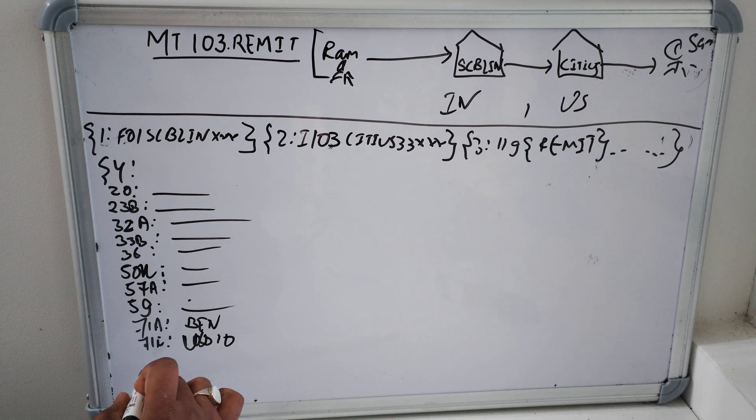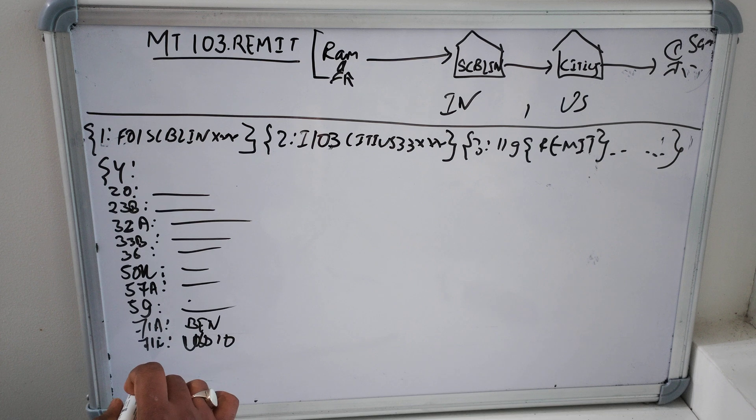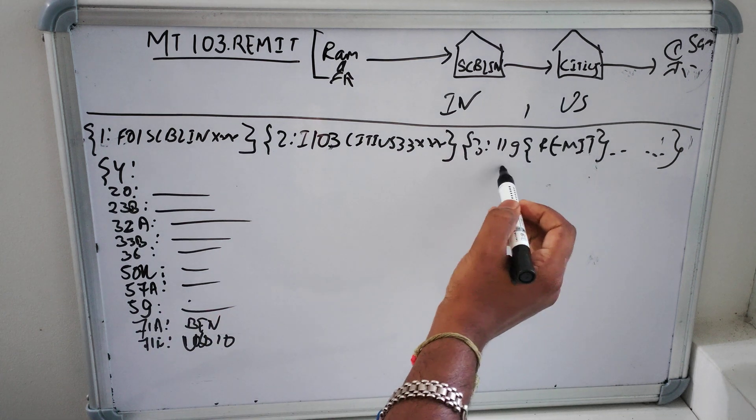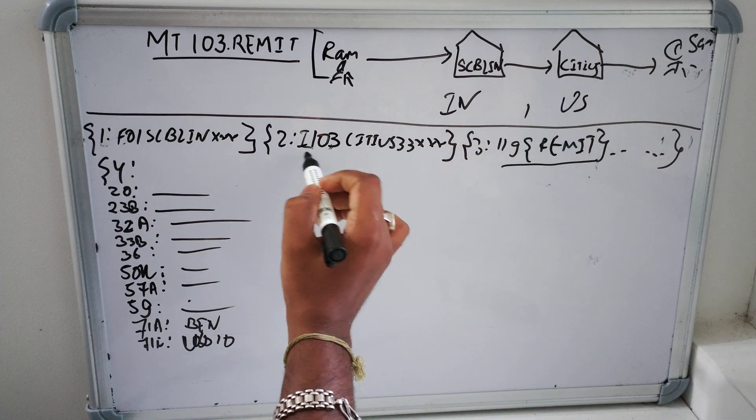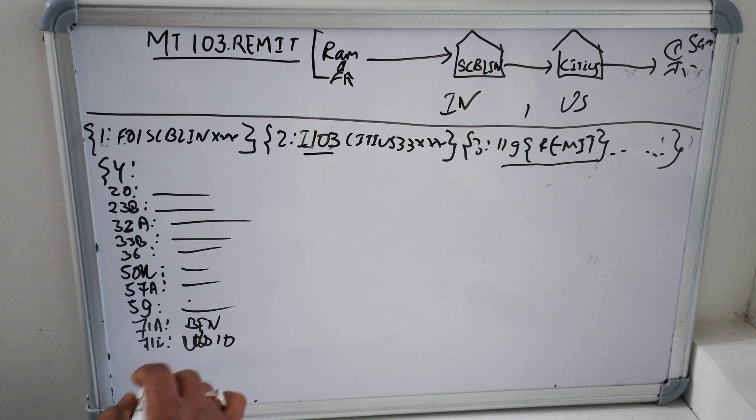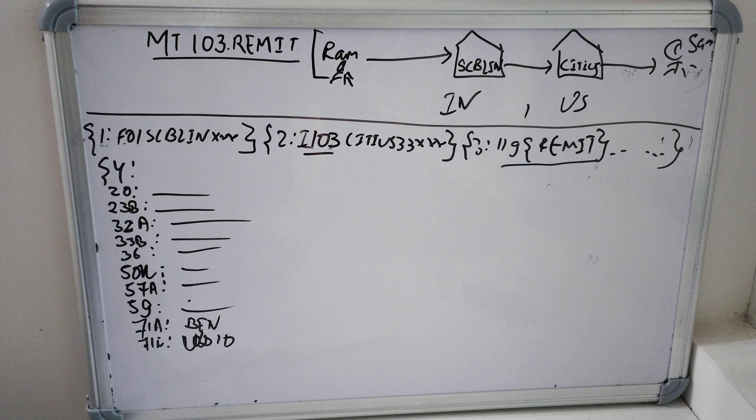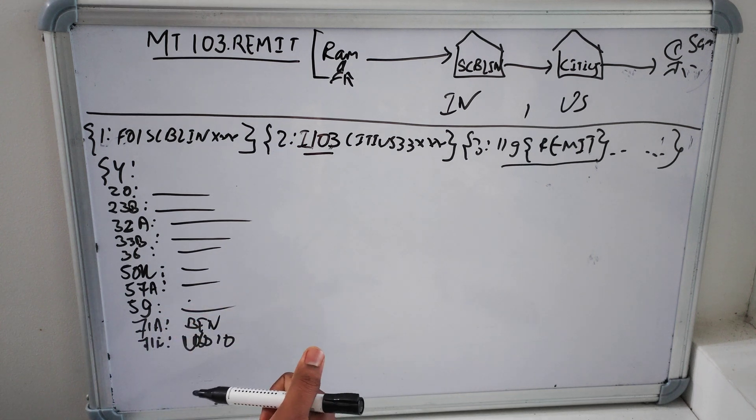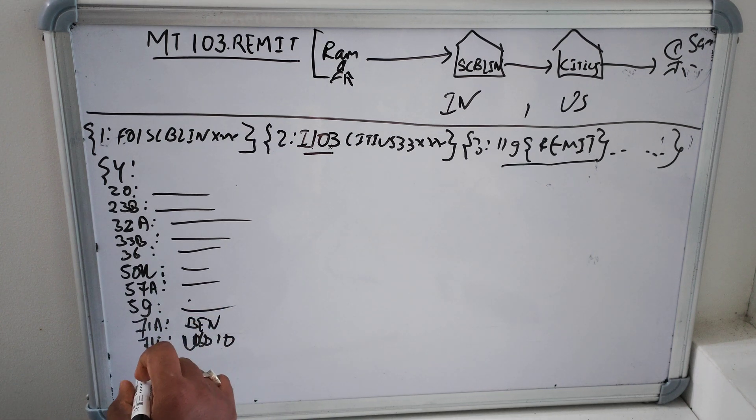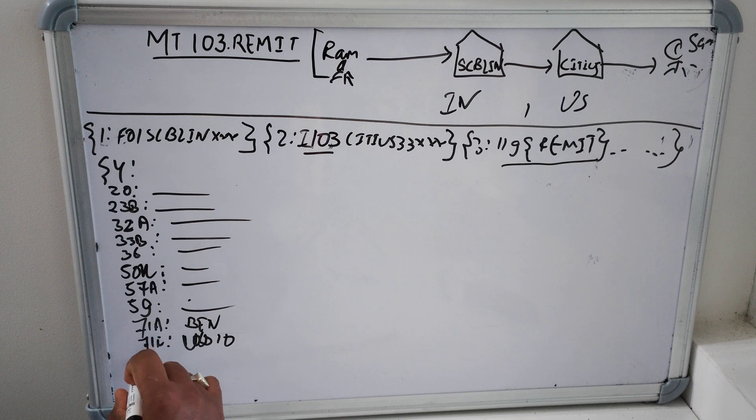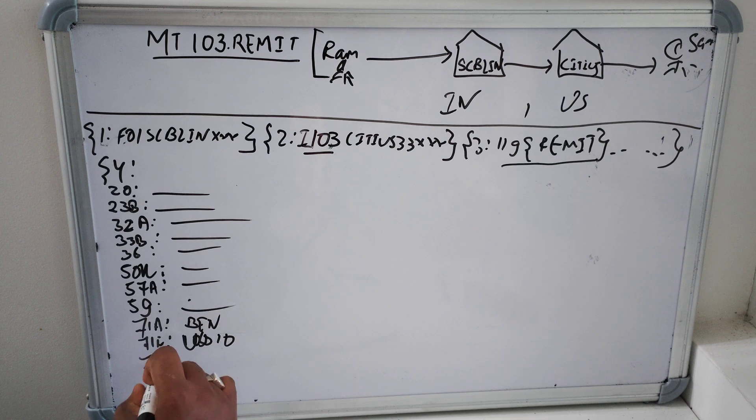And then we have, now remember as I said for the remittance since it is MT 103 remit, it will not use tag 70. And let's in this case we have tag 77T. Now tag 77T perhaps.